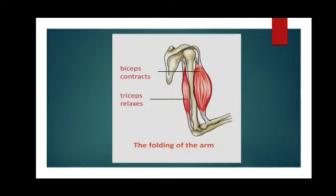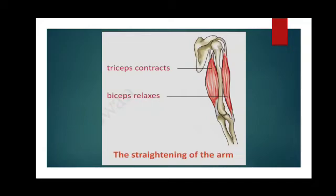When you are folding the arm, the biceps contract and triceps relax. This results in the lower arm moving towards the upper arm and you can fold your arm. The pair of muscles always work together by contracting and relaxing. Here, biceps are contracting and triceps are relaxing. Whereas when the arm straightens, biceps relax and triceps contract.